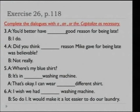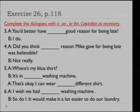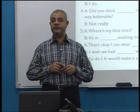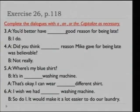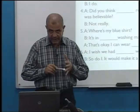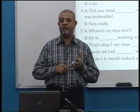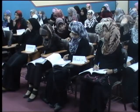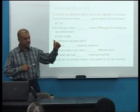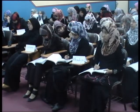Complete the dialogue with a, an, or the — capitalize as necessary. Can you remind me when we use a, an, and the? We use 'a' for singular count generic nouns; 'an' is the same but starts with a vowel. 'The' is used for second mention or definite nouns. Now do number one.